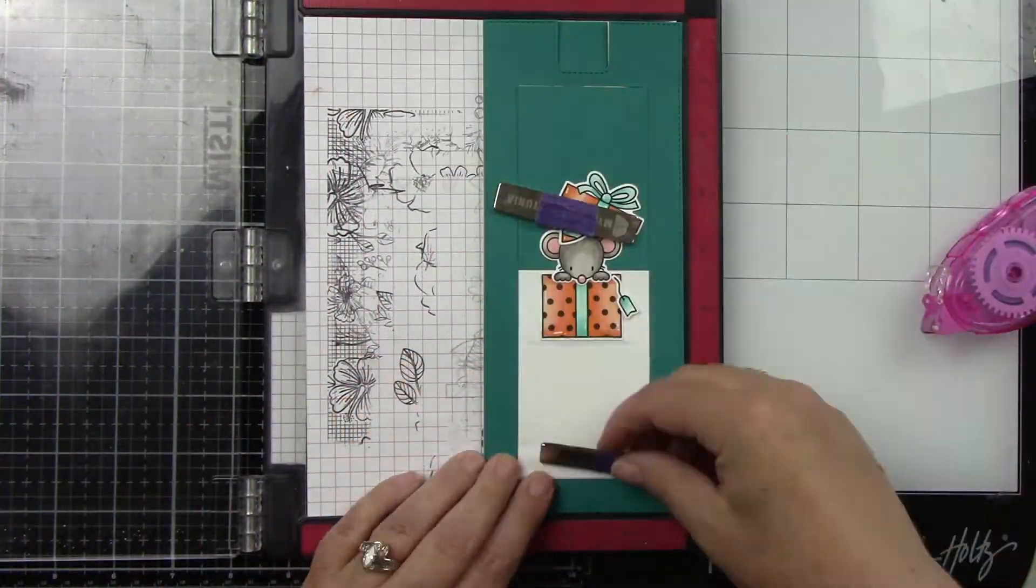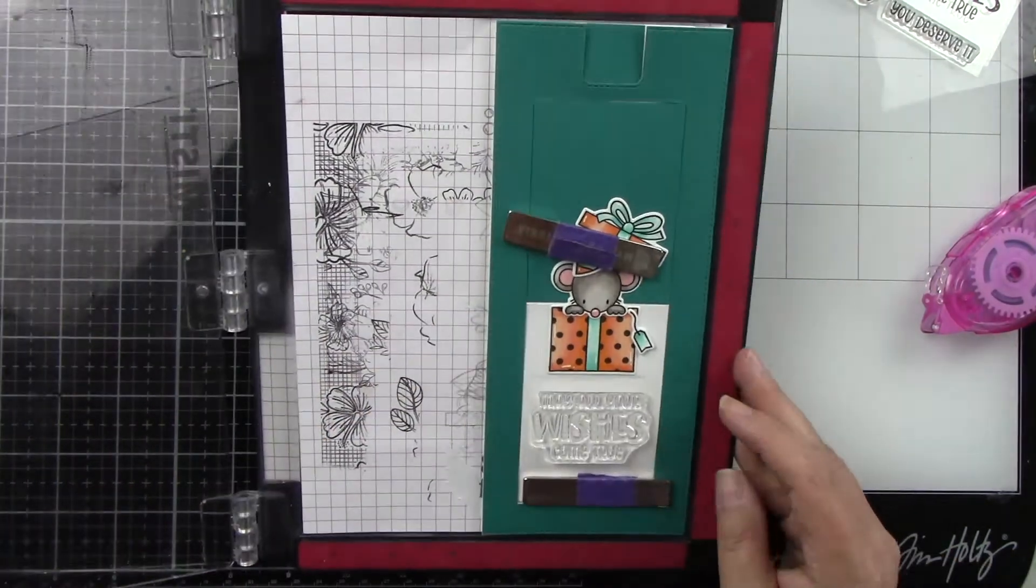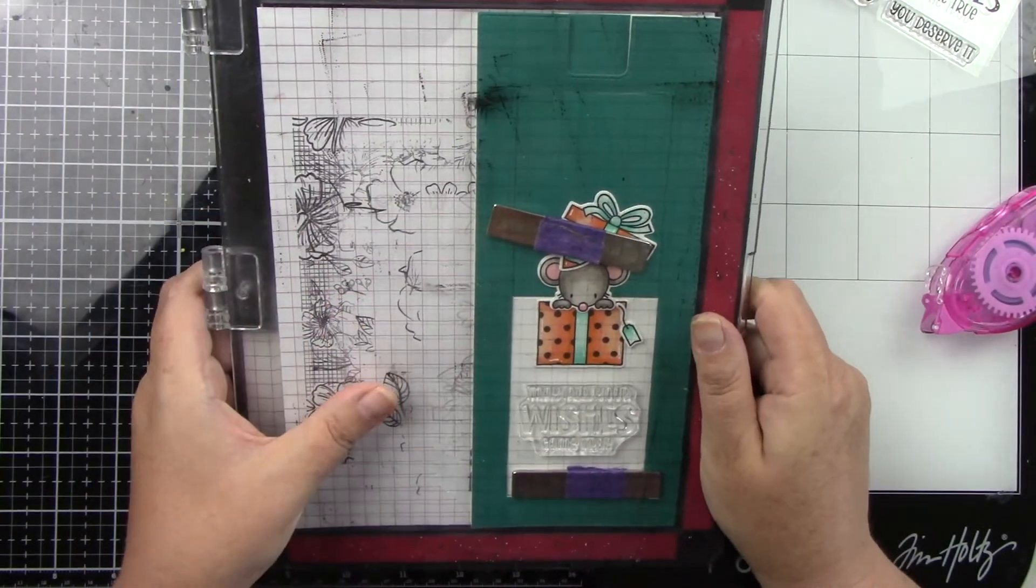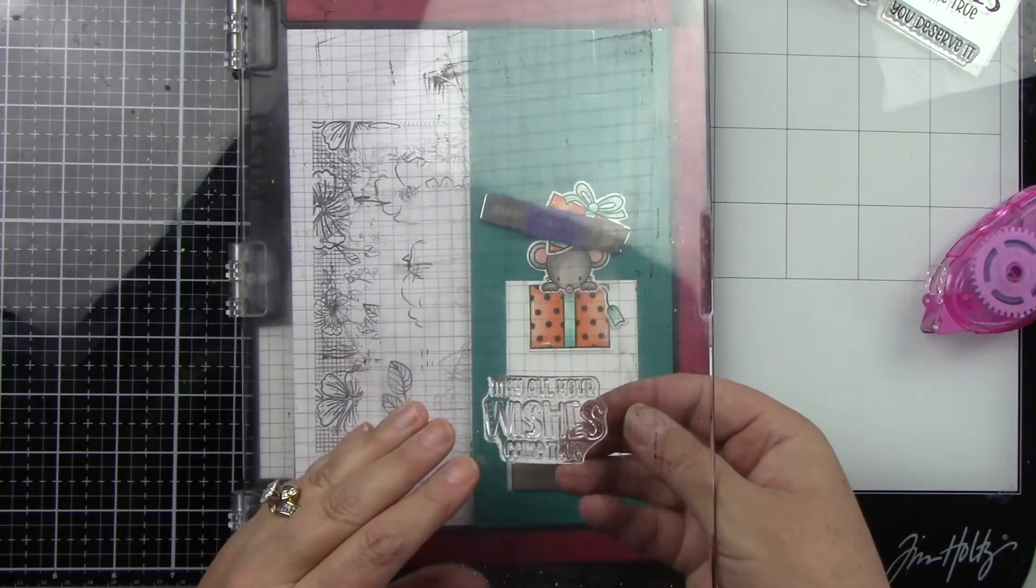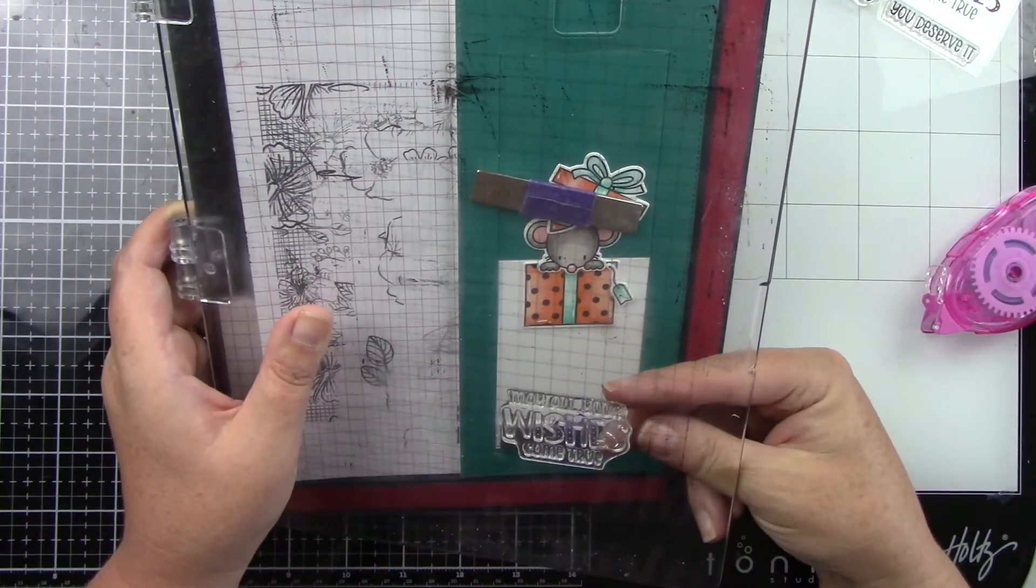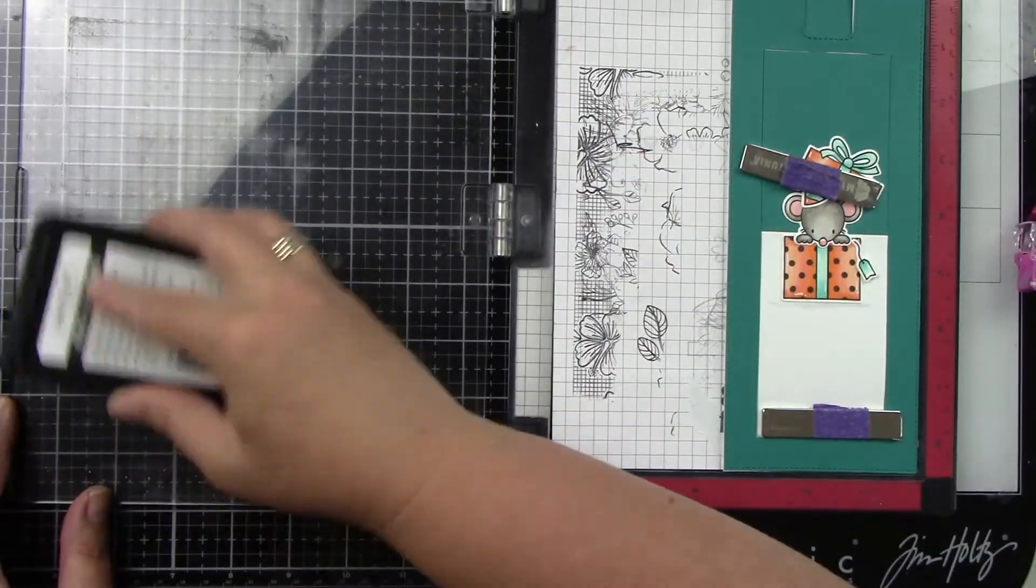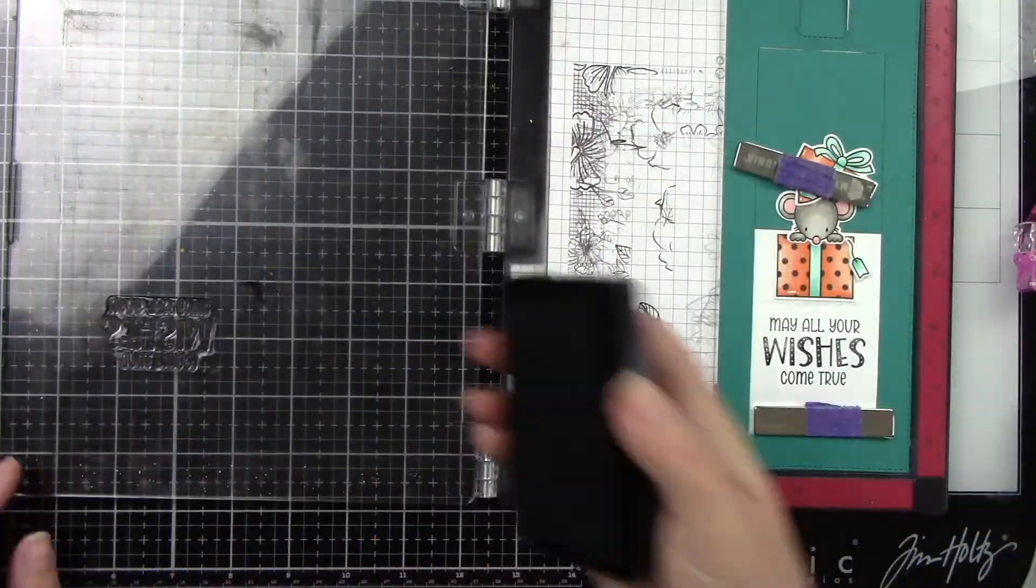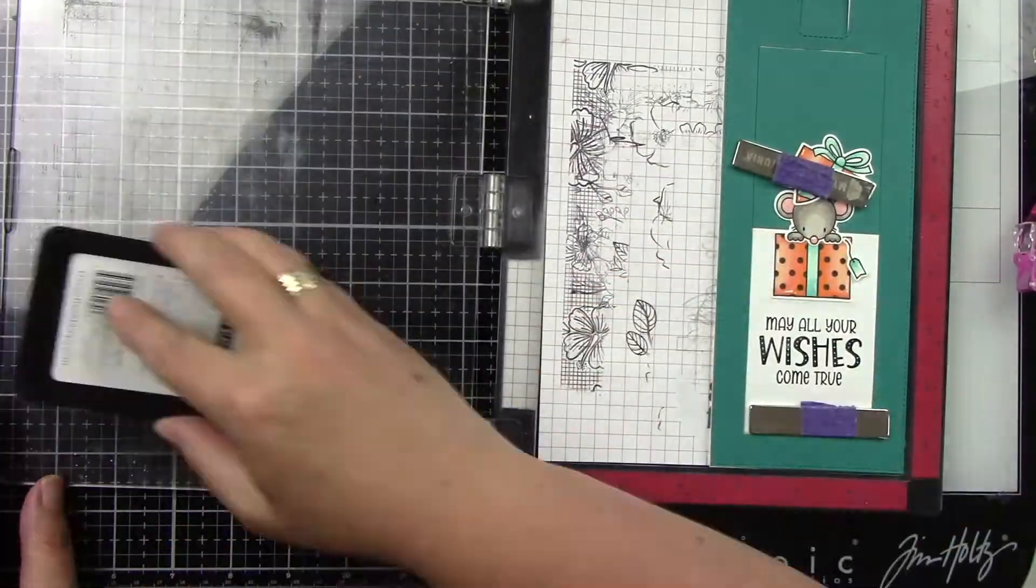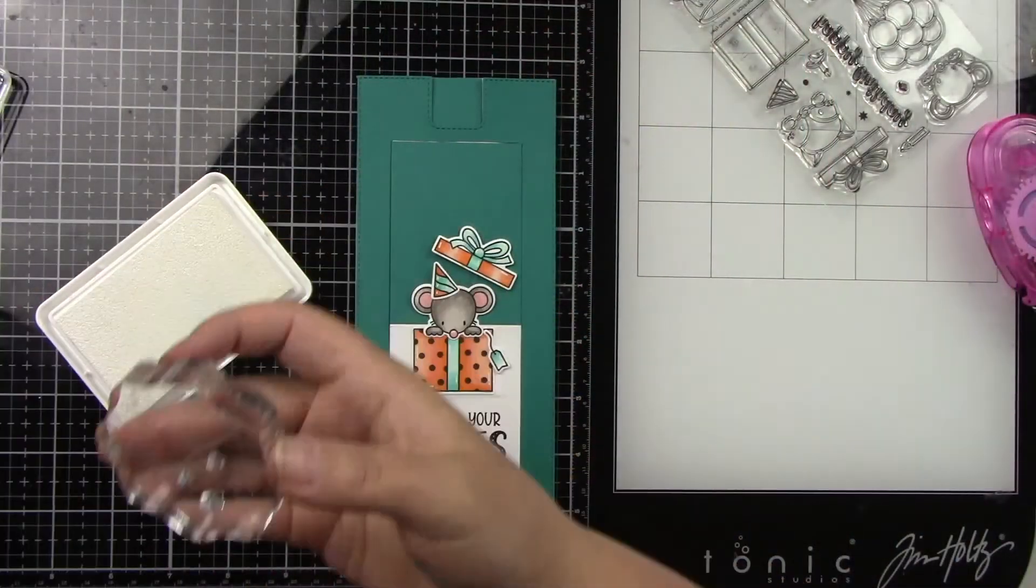Let's go into the Misti one more time and stamp the sentiment that says may all your wishes come true from Possum's extra large birthday greetings. I'm just going to stamp this in black ink. This is a great size sentiment, so it fills up a ton of space. Now we've got three sentiments on this card.